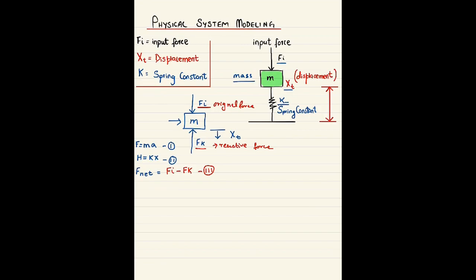Now we need to find the equation for fk. Since fk is the force produced by the spring with spring constant k, we write fk equals k times displacement. The displacement for this mass due to the spring is from the mass to the ground. At the ground point there is no displacement — it is zero. So fk equals k times (xt minus 0), which simplifies to fk equals k times xt — equation four.